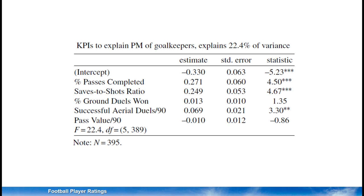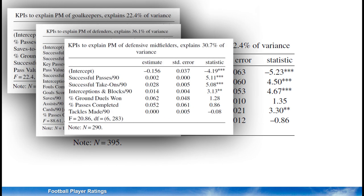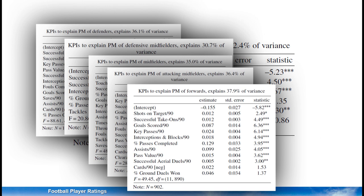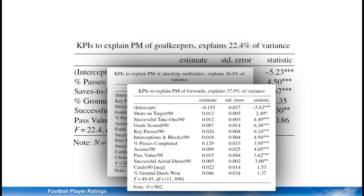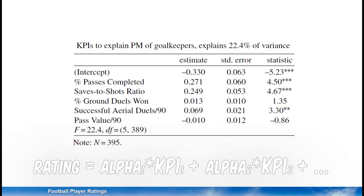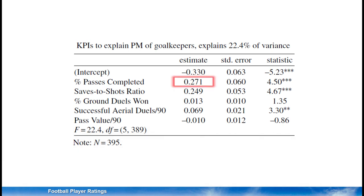Next we performed an analysis for groups of players based on their position, with separate numbers for goalkeepers, defenders, defensive midfielders, midfielders, attacking midfielders, and forwards. For each group we determined which KPIs are relevant and then created a linear regression model finding the relationship between the KPIs and plus-minus ratings. For goalkeepers, the plus-minus rating is in general higher if the goalkeeper has a higher percentage of passes completed, a higher saves-to-shots ratio, and a larger number of successful aerial duels.